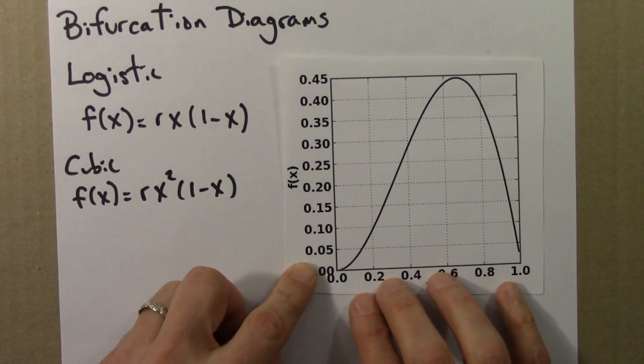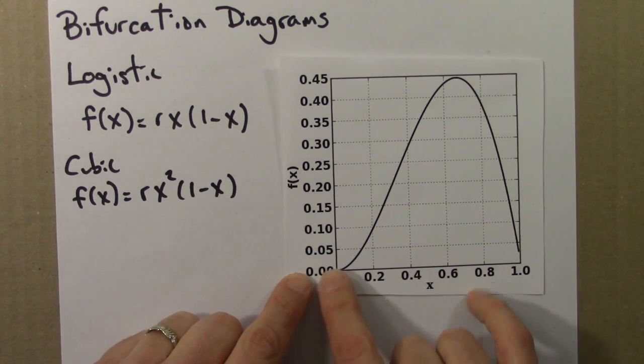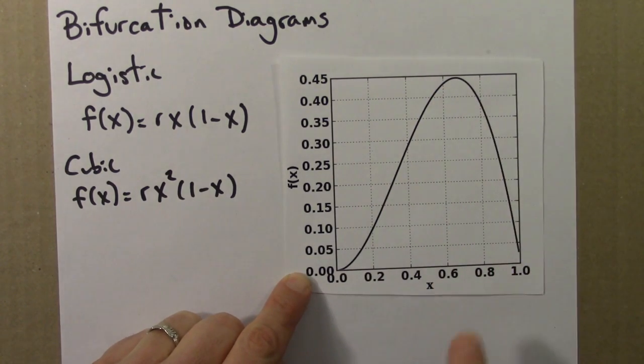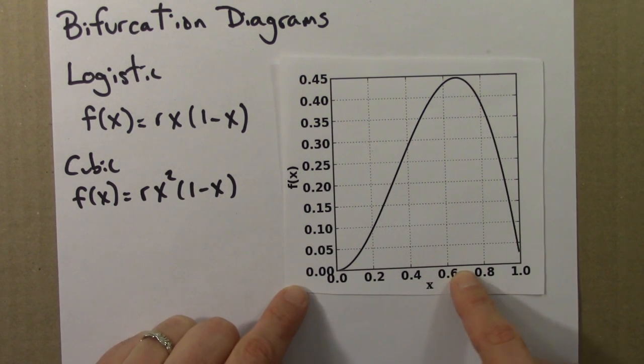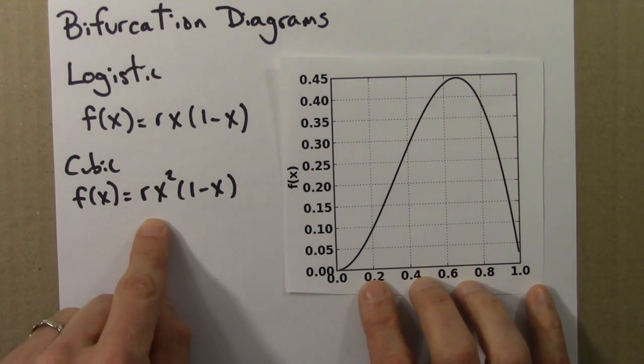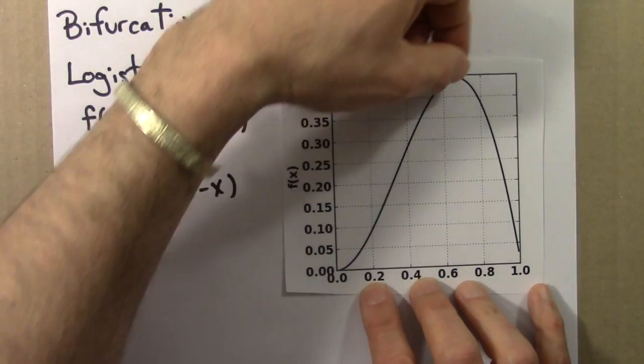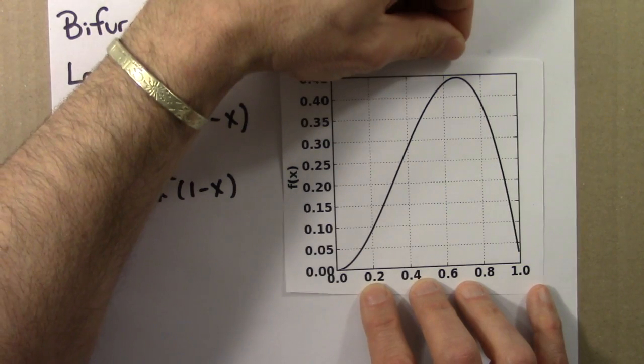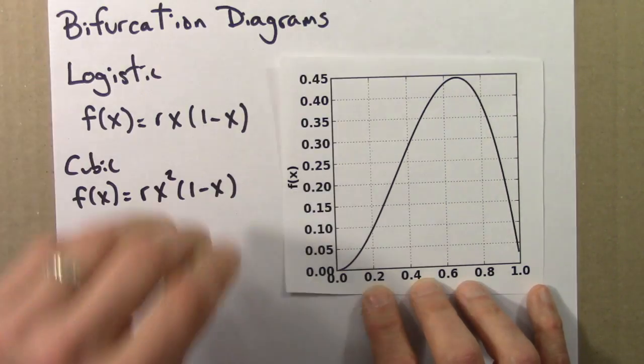Here's a plot of the function. Note that it's no longer symmetric. It increases, has a peak, goes down. But the peak is over here at about 0.65 or something. As before, r is a parameter that has the effect of stretching this function up. The larger r is, the steeper and taller this would become.